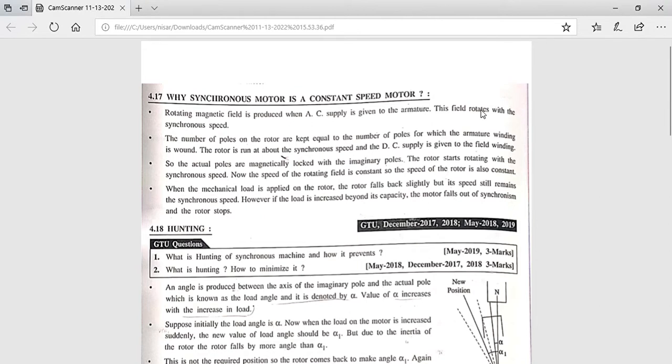So the rotor runs at synchronous speed, and DC supply is given to the field. The field is on the rotor. We give three-phase AC to the armature and DC supply to the field.